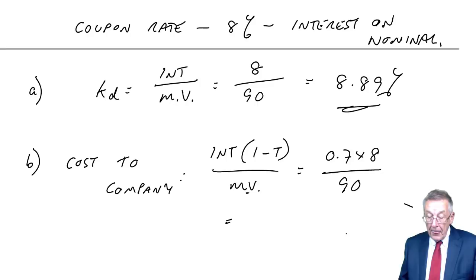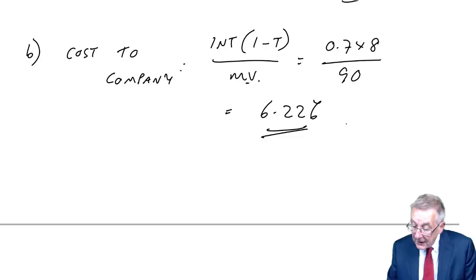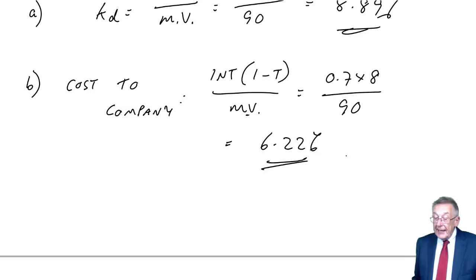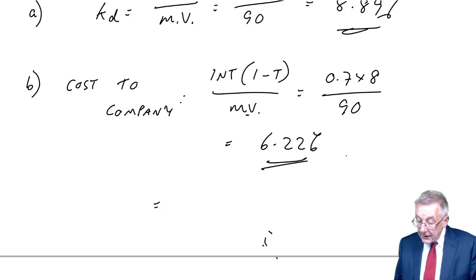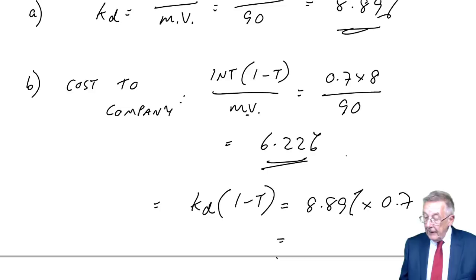Now, I have a couple of things to say here. I think pretty obviously we could have written that 6.22 another way. Because, the investors are getting 8.89. We're saving tax at 30%, so you could just have taken the cost of debt less the tax. The return to investors less the tax, 8.89 times 0.7. Which again, obviously, 6.22%, it doesn't matter.